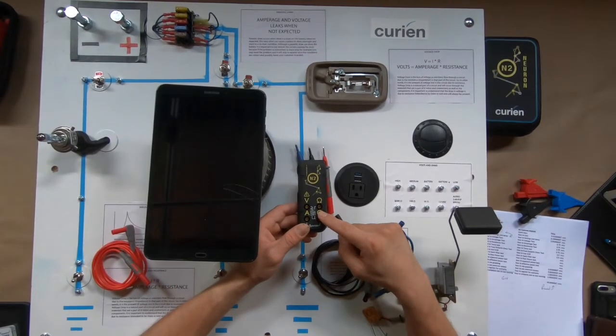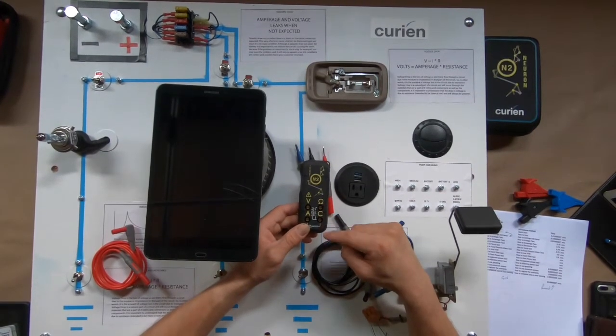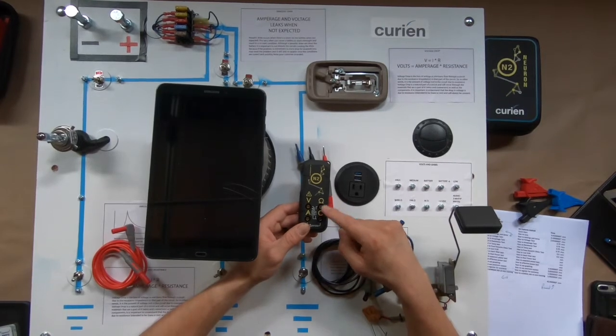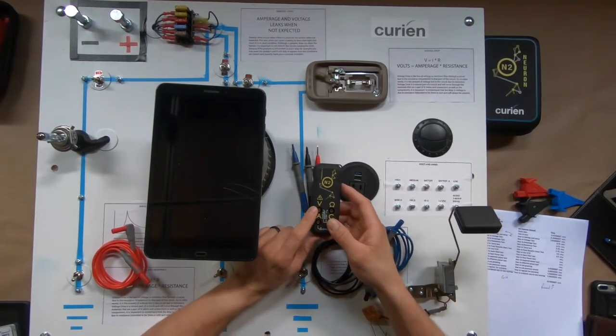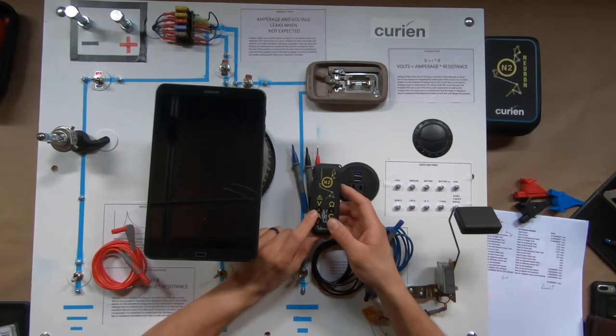For AC it's negative two to positive two on the AC side, and on the volt side it is also doing AC DC.